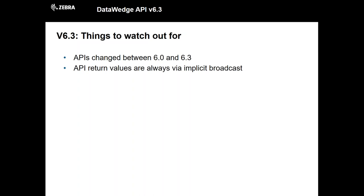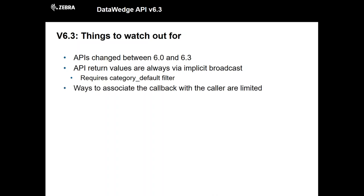Some things to watch out for as you code your app: the API syntax changed between 6.0 and 6.3. If your app needs to run on a minimum baseline of 6.0, be very aware of which APIs and syntax you're using. API return values are always via implicit broadcast — in Android O there are limitations coming to implicit broadcasts, and we will be making sure enterprise applications are accounted for when that time comes. For now, my advice is to use a dynamic broadcast receiver rather than defining something in your manifest. And make sure you define the category default filter when setting up your broadcast receiver filter.